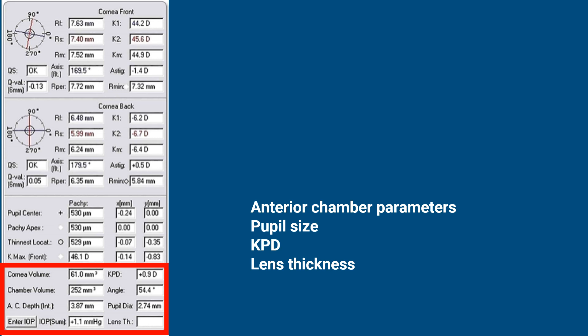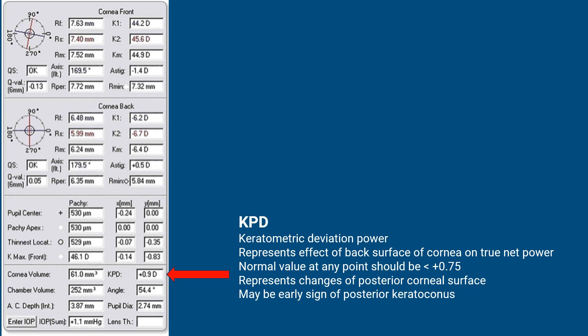The final set of parameters covers anterior chamber values. KPD is the keratometric deviation power — it represents the effect of the back surface of the cornea on the true net power. The normal value at any point should be less than plus 0.75 diopters. It may be an early sign of posterior keratoconus, since keratoconus starts as a posterior keratoconus. If KPD is high, it may be the first sign of keratoconus.